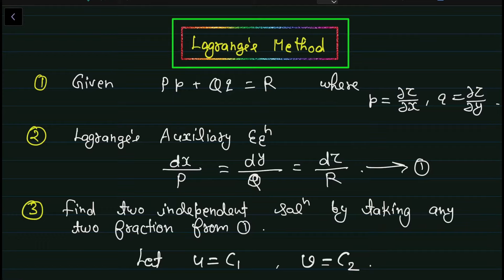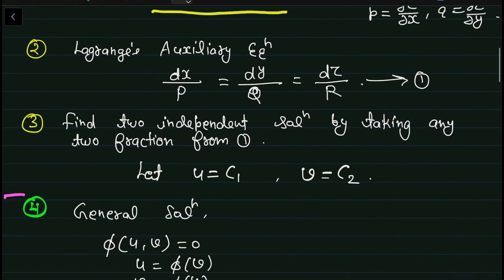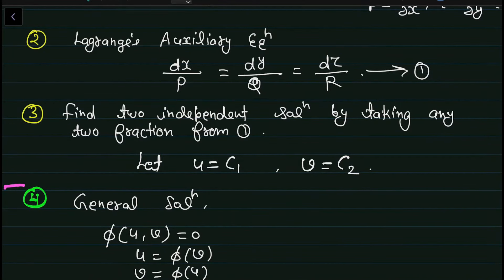Let's start with the working rule. The differential equation is Pp + Qq = R, where P, Q, R are functions of capital X, Y, Z, and small p, small q are the values of ∂z/∂x and ∂z/∂y respectively. Then we use the Lagrange auxiliary equation: dx/P = dy/Q = dz/R. This is our Lagrange auxiliary equation — three fractions. In the third step, we find two independent solutions by taking any two fractions from equation 1.